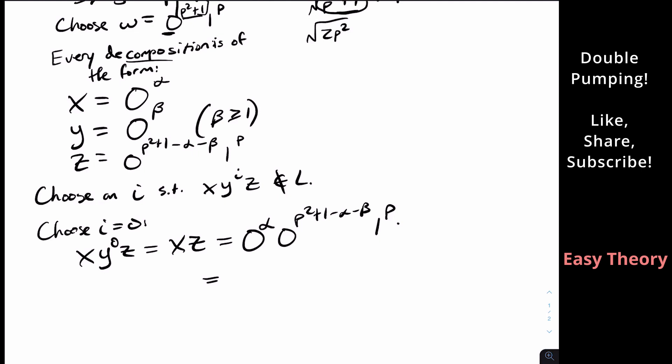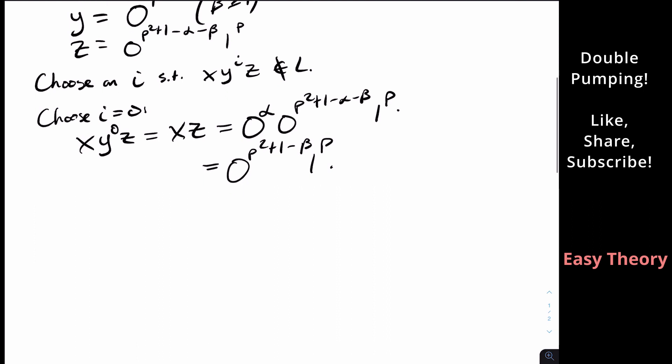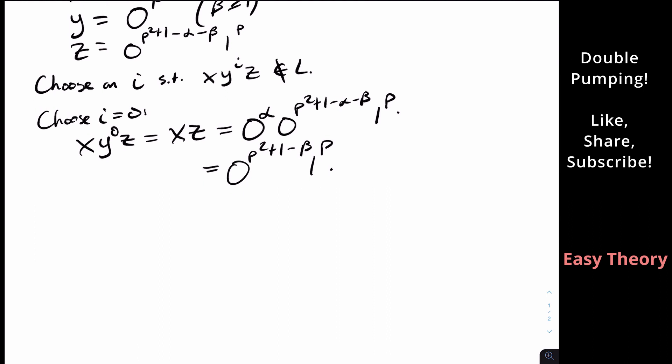And if I take these two zeros together, well, the alphas cancel. So I'm going to get P squared plus one minus beta, one to the P. So what has to be true? Well,